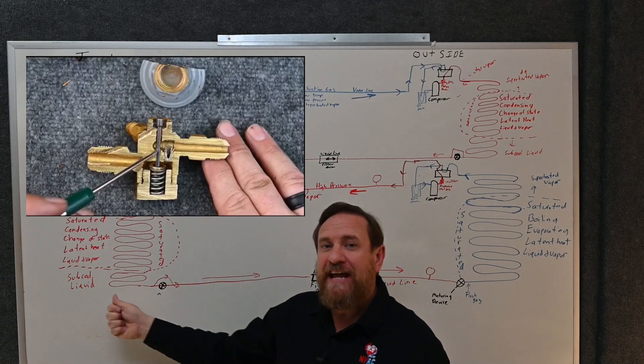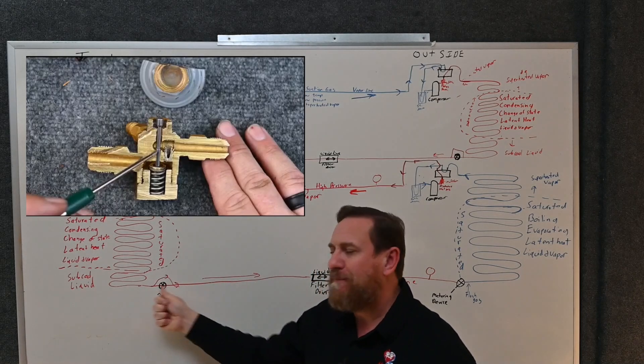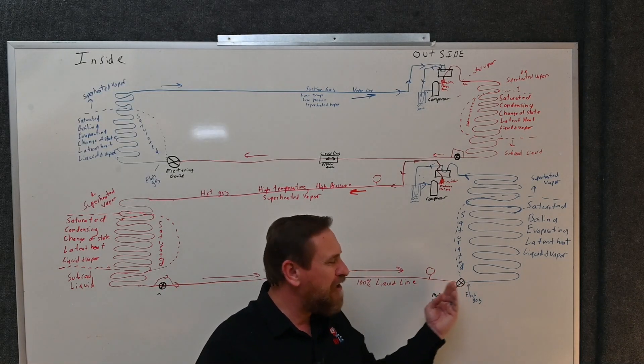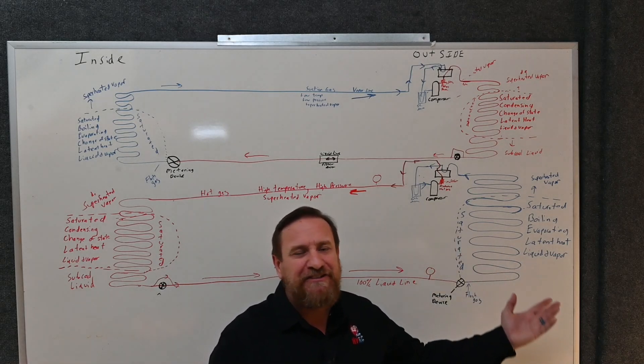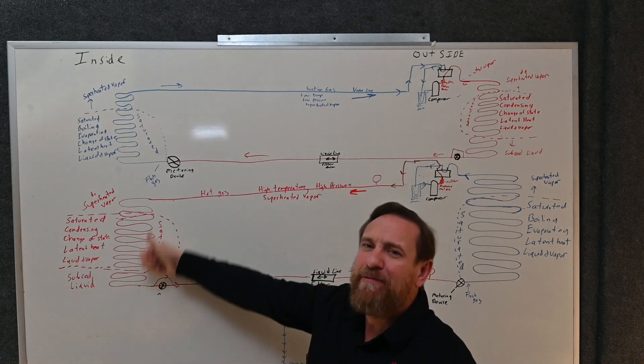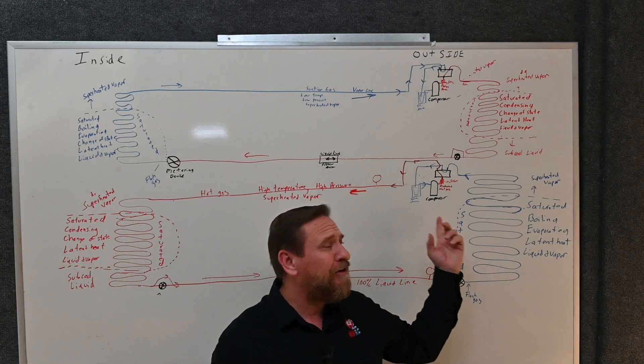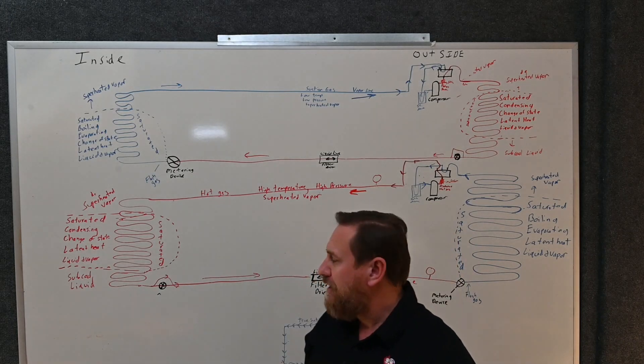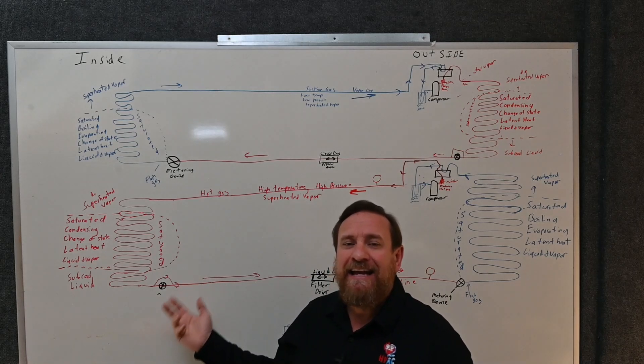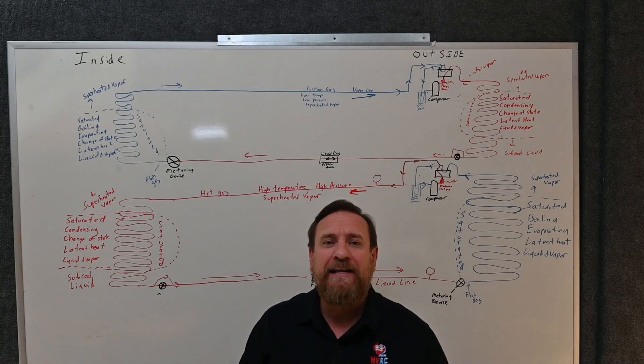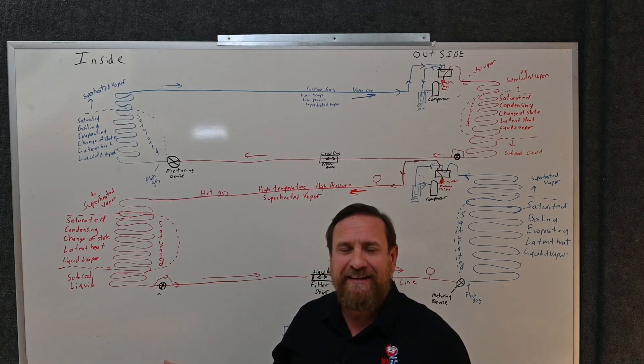Now all of a sudden you have a pressure drop across here, another pressure drop at your outdoor metering device. Your suction pressure tanks and your head pressure spikes. Next thing you know you're tripping on a high pressure switch, and not just high pressure switch, but probably you're going to overheat that compressor pretty quick too. In that case, we want to make sure that we either clean that TXV, take it apart, get it clean, or we're going to replace that TXV.